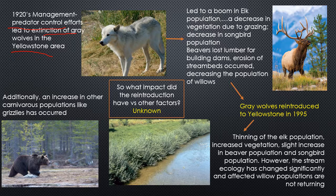Once that keystone species was gone, it created a domino effect: the elk population boomed, vegetation decreased due to elk grazing, songbird populations declined, beavers lost lumber for building dams causing stream bed erosion, and willow populations that depended on those stream beds declined. Removing the keystone species changed the entire ecosystem.